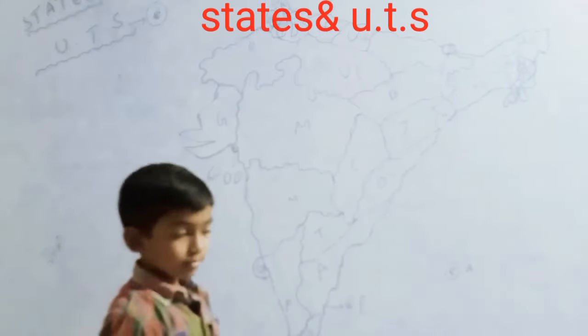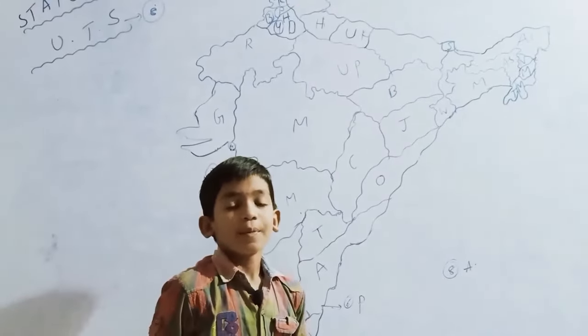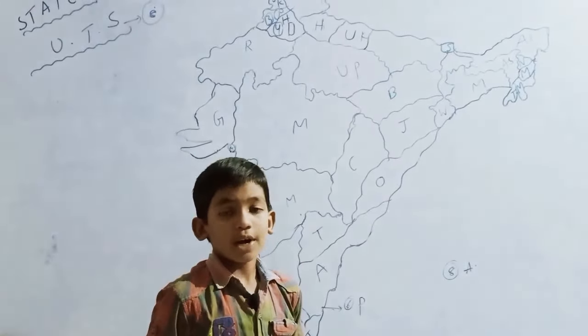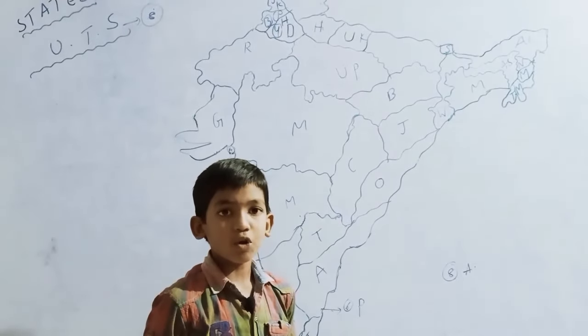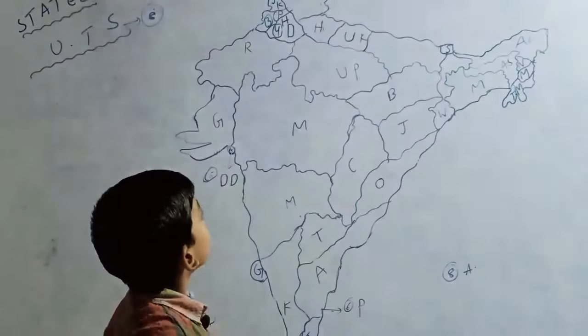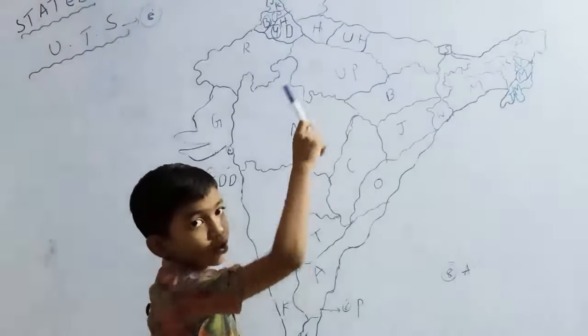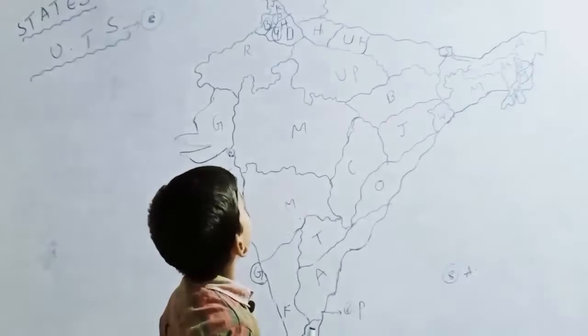First, in India there are 28 States and 8 Union Territories. First, we will learn about 8 Union Territories.